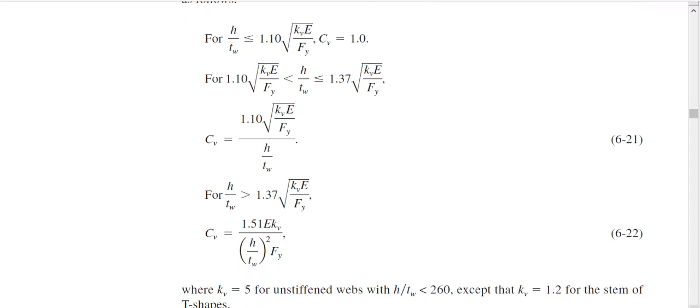These equations, this equation in your book will tell you how to find it. If this ratio is less than this, Cv is 1. Your life is simple. If your h by TW ratio is in between this and this, your Cv can be calculated using this equation. If your h by TW ratio is more than this, you can calculate your Cv using this equation. So you have to check which condition is suitable for you. Now here everything is known except Kv.